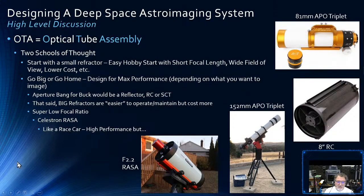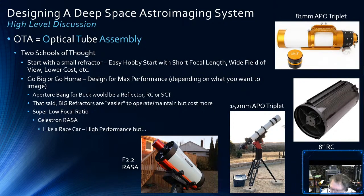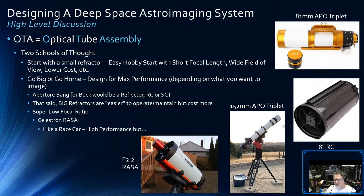Bruce notes that for very wide field deep sky with a DSLR and camera lens, there are less expensive mount options — like the Star Adventurer — which is a good way to start for many people. This talk is mainly focused on deep deep space, but certainly for a DSLR and small refractor or camera lens, lightweight portable options without counterweights may work well, though they're limited once you start doing galaxies and nebulae.